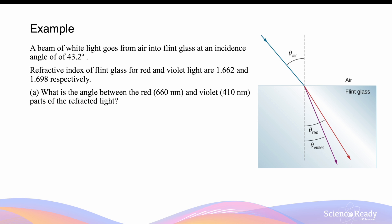A beam of white light goes from air into flint glass at an incident angle of 43.2 degrees. The refractive indices of flint glass for red and violet light are 1.662 and 1.698 respectively. We want to find the angle between the red and violet parts of the refracted light. To do this we need to find the angle of refraction for the two lights separately using Snell's law.